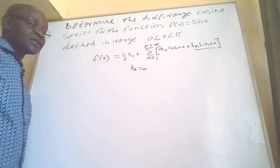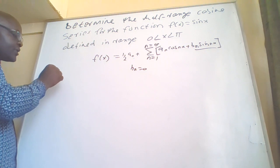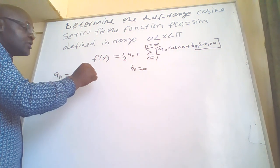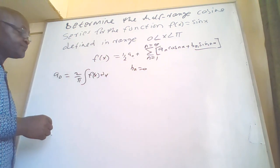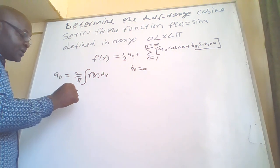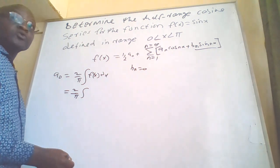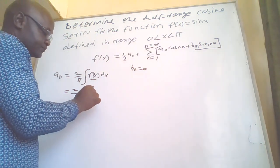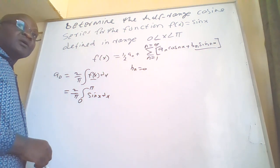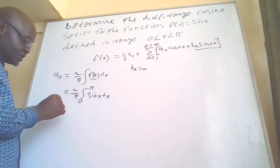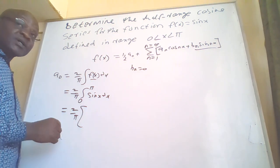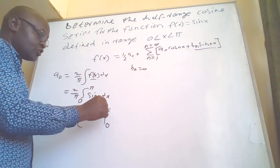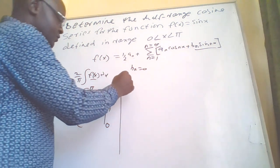Now how do we get a₀? Our a₀ is given by (2/π) times the integral of f(x) dx. So this equals (2/π) integrating from 0 to π, where f(x) is sin(x). So we have (2/π) times the integral from 0 to π of sin(x) dx. When you integrate sin(x), you get negative cos(x), with limits from 0 to π.